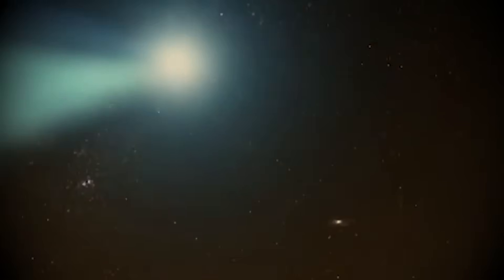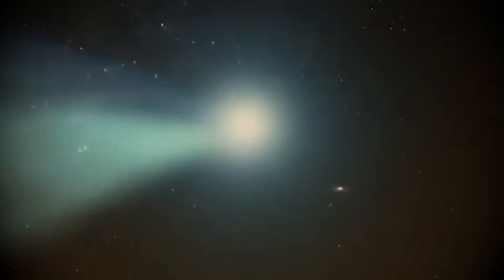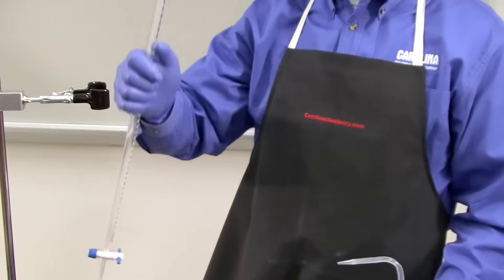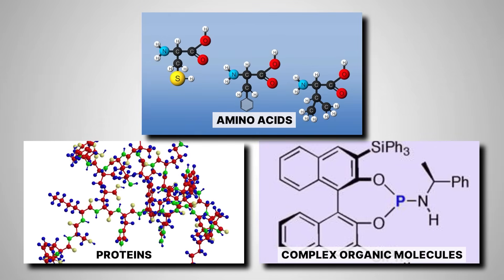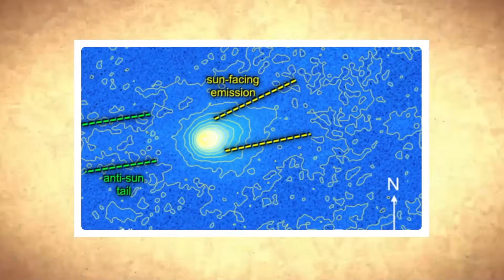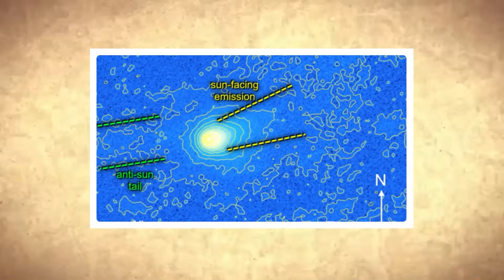Now, before you jump to conclusions, let's be clear about what this means. These aren't signs of living organisms, but they are the chemical ingredients that can eventually lead to the formation of amino acids, proteins, and other complex organic molecules. And the concentrations coming off this comet are breaking records in ways that make scientists do a double-take.